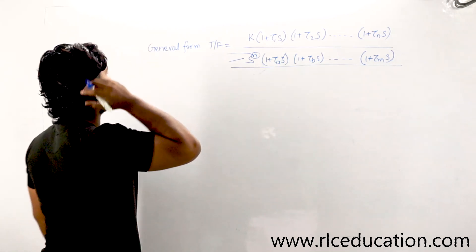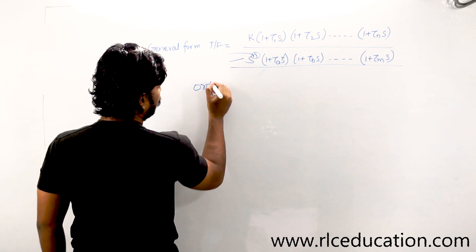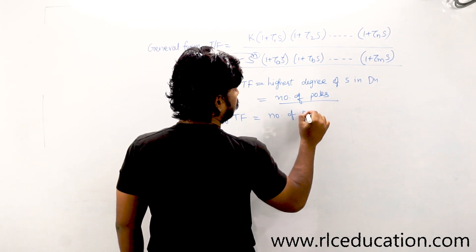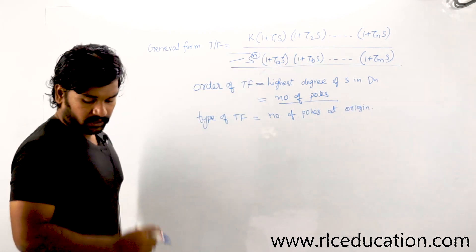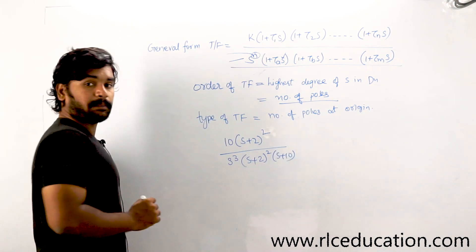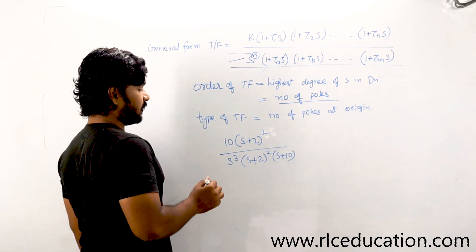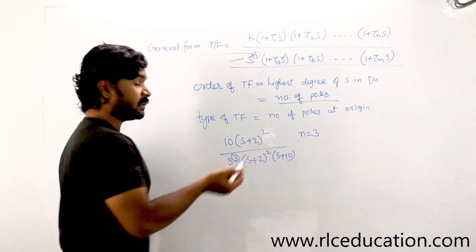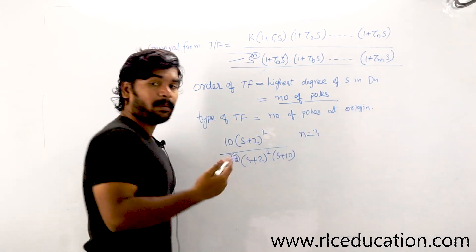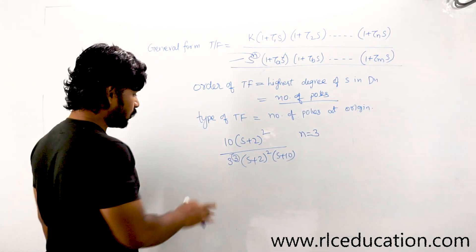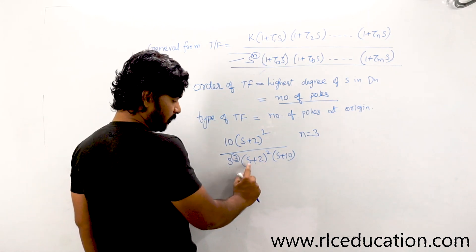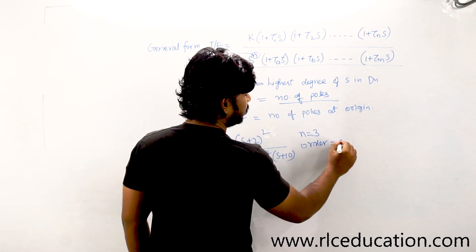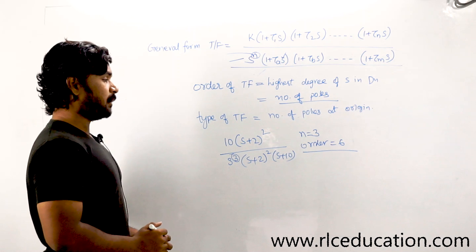Now let us discuss the order of the transfer function and the type of the transfer function. Type of a transfer function equals the number of poles at the origin. For a given transfer function, if you look at the denominator: the type n is determined by the power of s at the origin — here type n = 3. The order is the total number of poles, i.e., how many possible values of s make the denominator zero. For example, with s³, (s+2)², and (s+something), giving 3 + 2 + 1 = 6 — so it is a Type 3, sixth-order system.